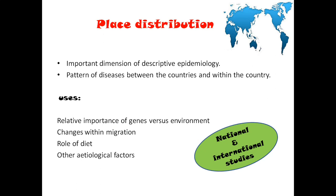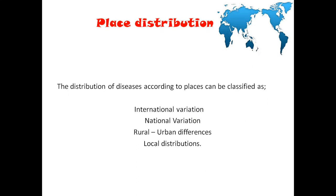Place: we need to find out where the disease has happened — how it is distributed in a geographical area. Whether it is a big disease or a pandemic, or a disease which happened in a town, state, district, or country, we need to find out the local distribution, the urban-rural differences, and national and international variations.